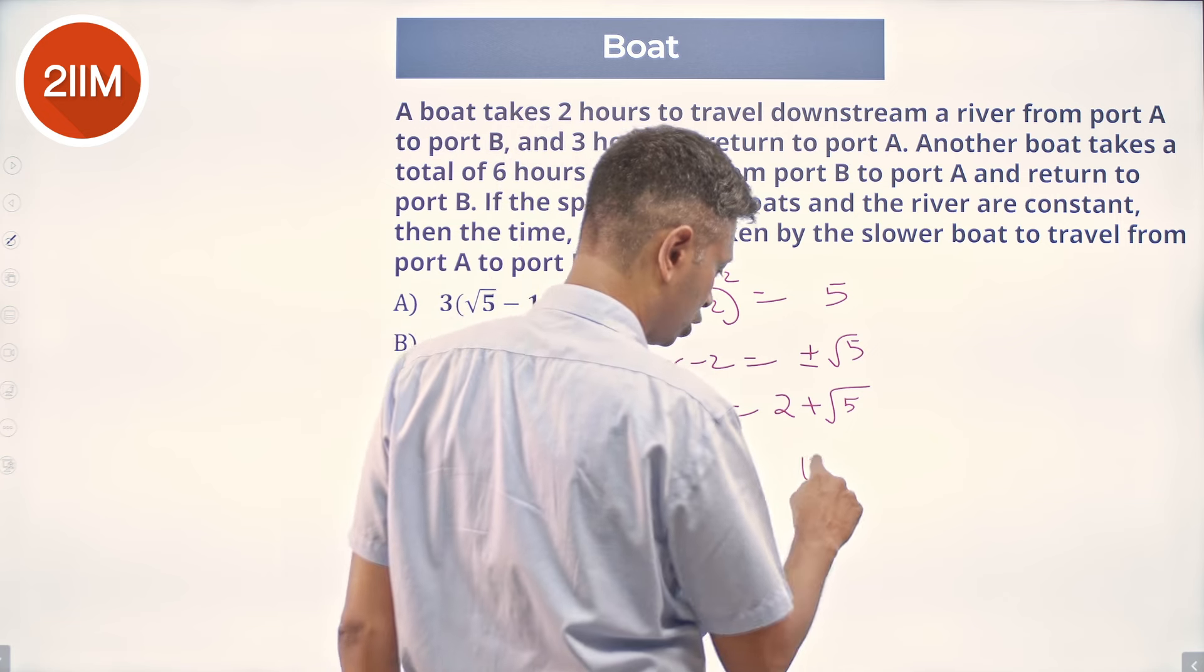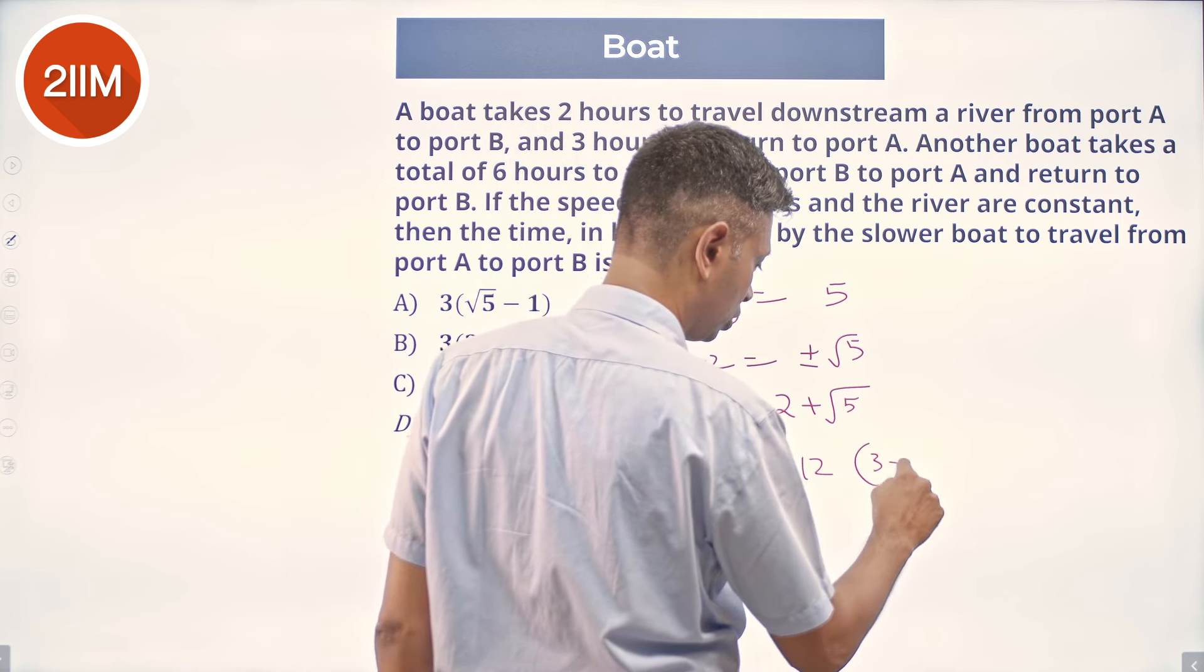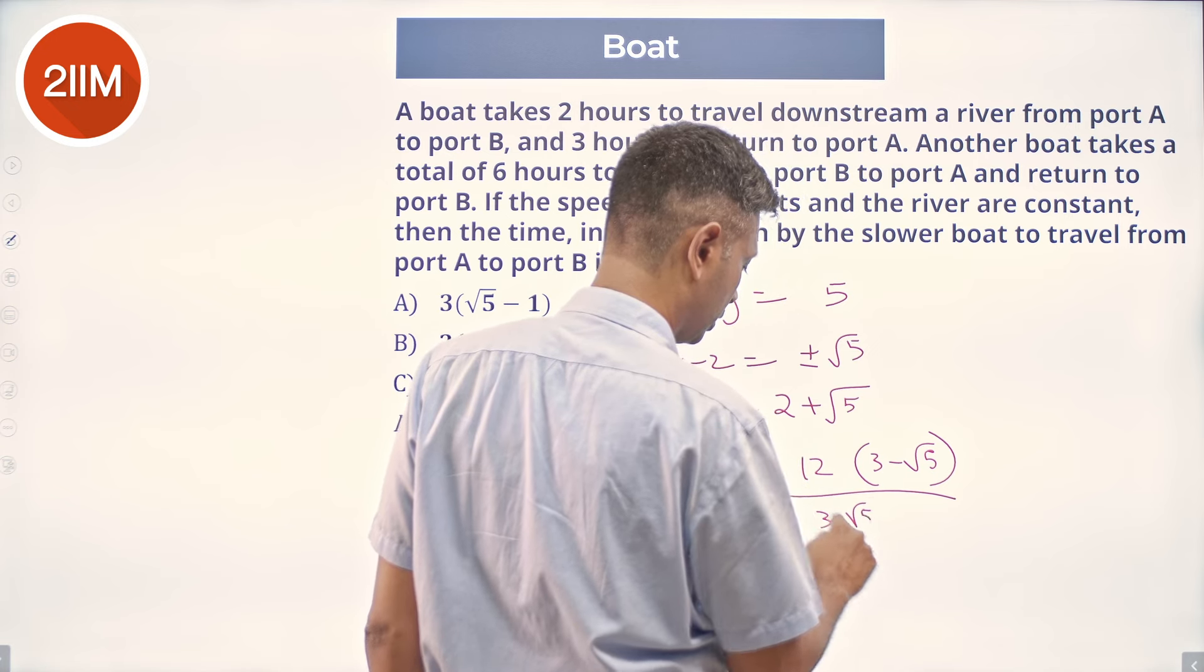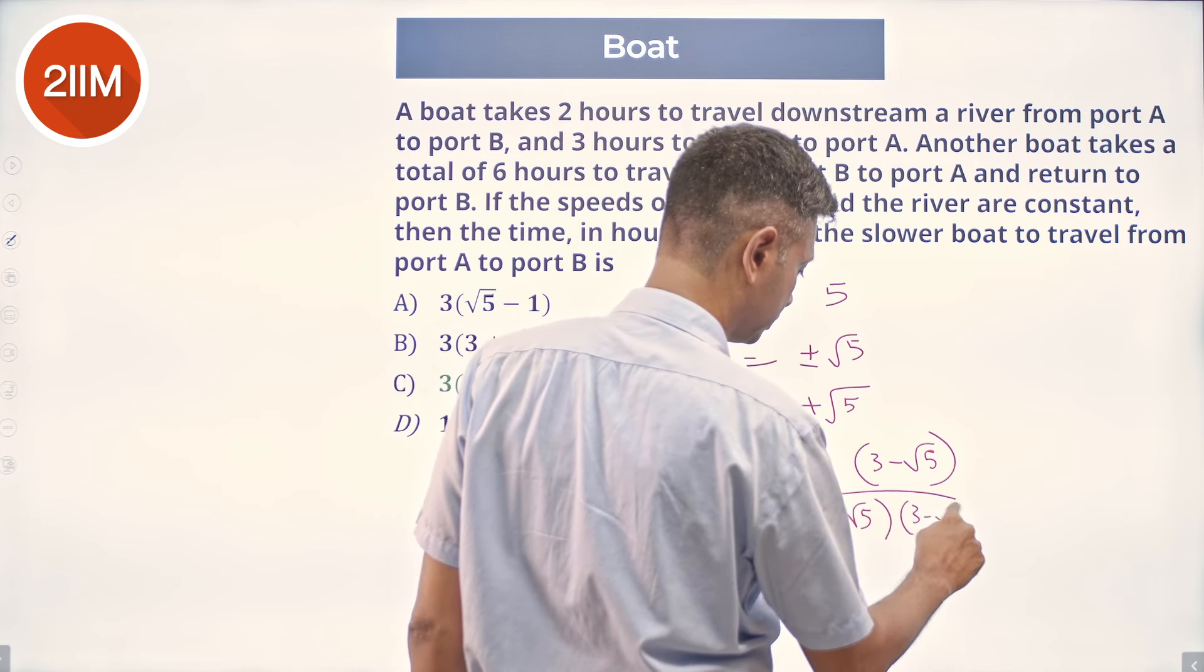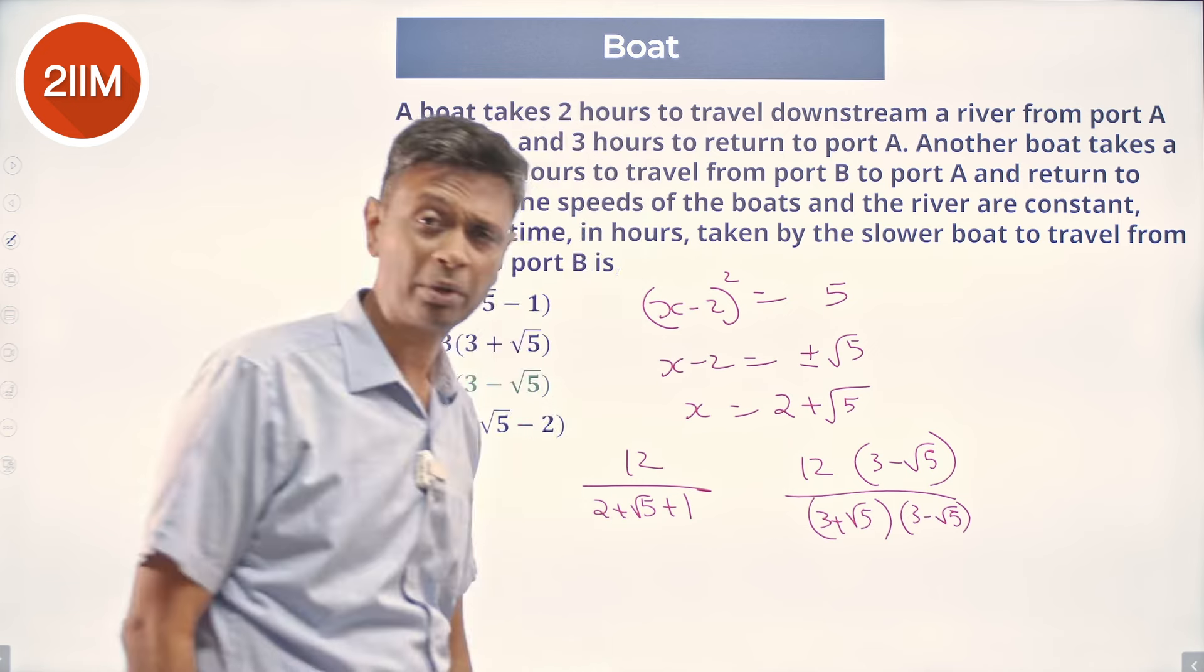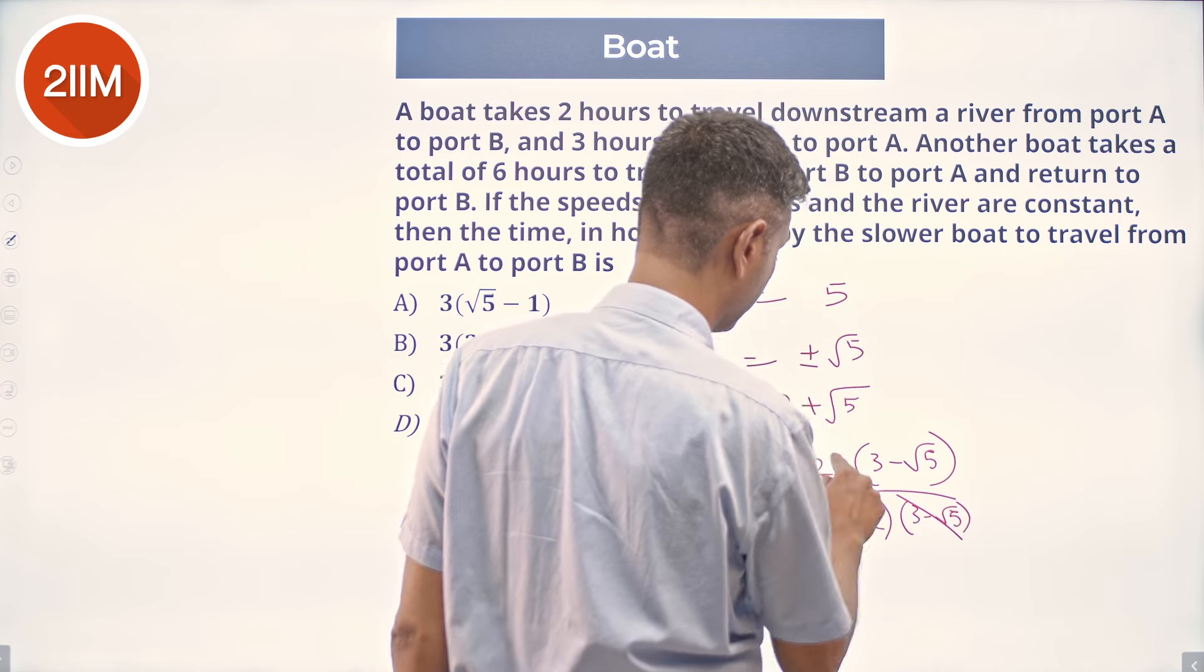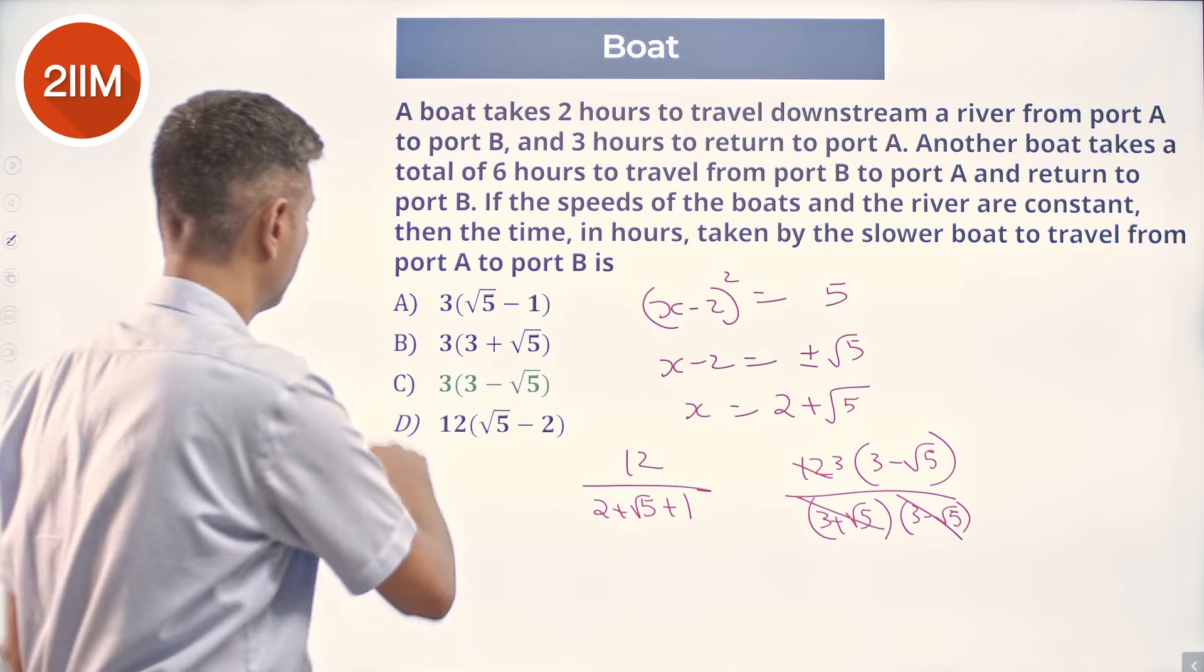So, 12 by 3 plus root 5, 12 into 3 minus root 5 by 3 plus root 5 into 3 minus root 5. 3 plus root 5 to 3 minus root 5 is 9 minus 5, 4. 12 by 4, 12 by 4 is 3, 3 times 3 minus root 5.